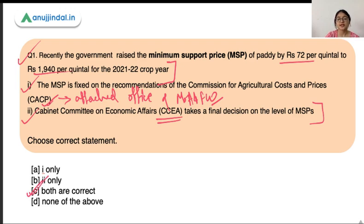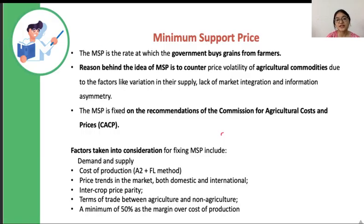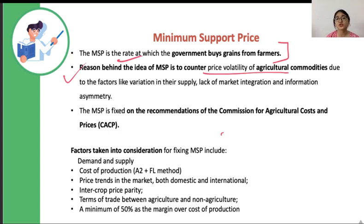Now let's talk about MSP in detail. MSP is the rate at which the government buys grain from farmers — a price at which the government procures agriculture produce. The reason behind launching MSP was to counter the price volatility of agricultural commodities like rice, wheat, pulses, and oilseeds. There is a lot of price volatility due to market forces: if supply is very good in a given year but demand is not matching, the price would fall.